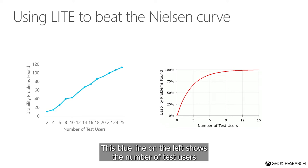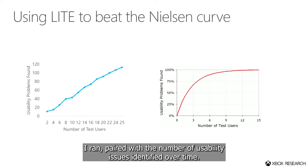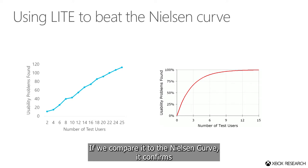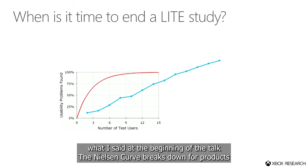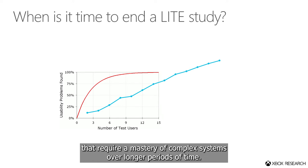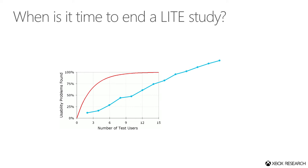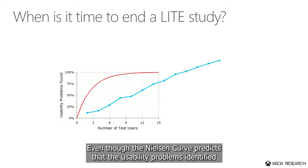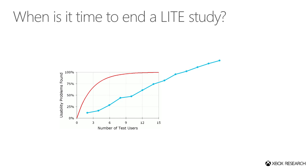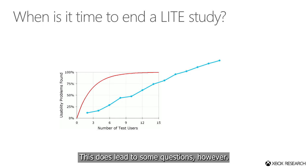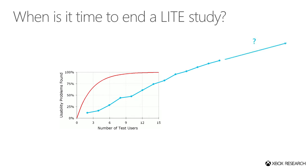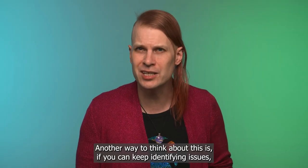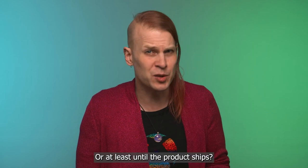This blue line on the left shows the number of test users I ran, paired with the number of usability issues identified over time. If we compare it to the Nielsen curve, it confirms what I said at the beginning of the talk: the Nielsen curve breaks down for products that require mastery of complex systems over longer periods of time. Even though the Nielsen curve predicts that usability problems identified will reach an asymptote before you hit 15 participants, that wasn't the case for my product. This does lead to some questions: does the curve for LIGHT ever reach asymptote? Where would the 100% line ultimately land? If you can keep identifying issues, why not just keep collecting data forever, or at least until the product ships?